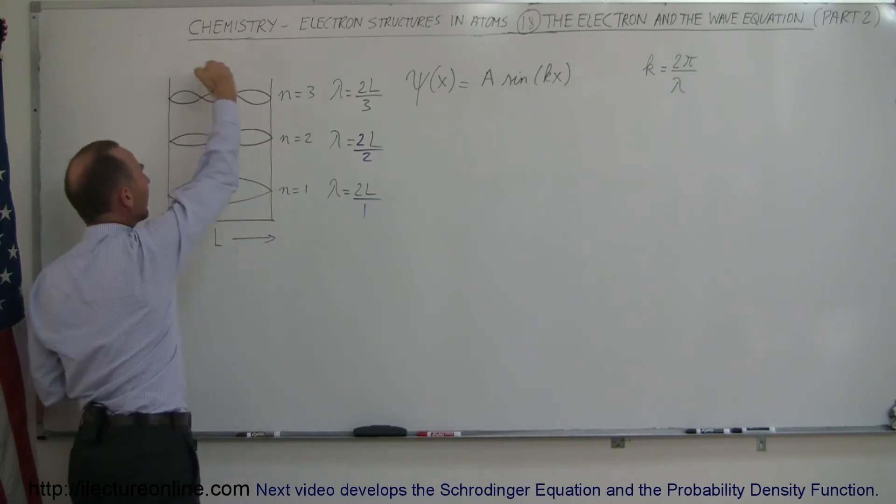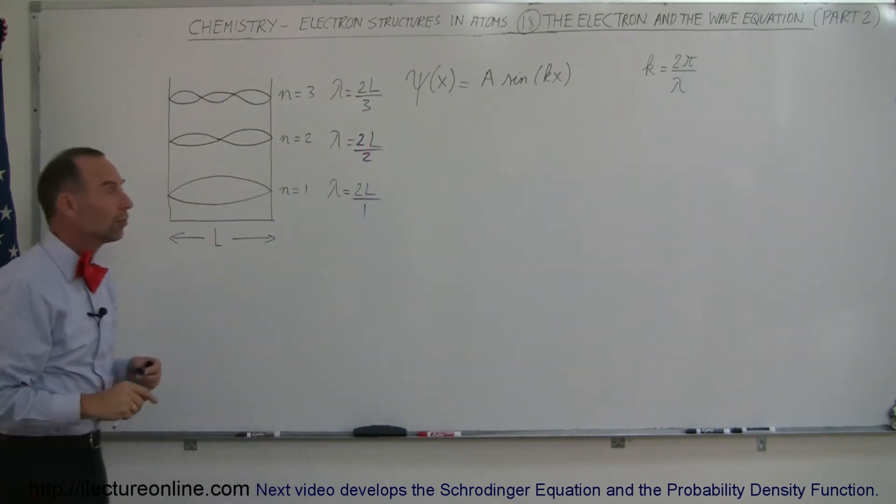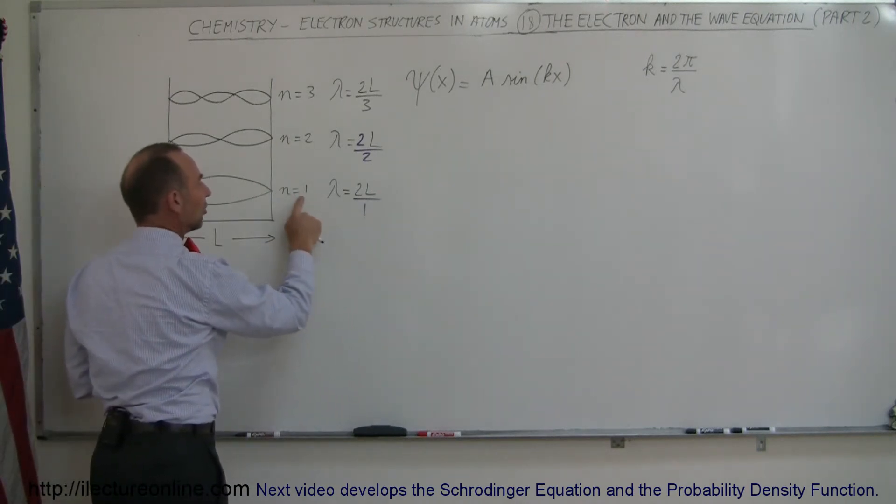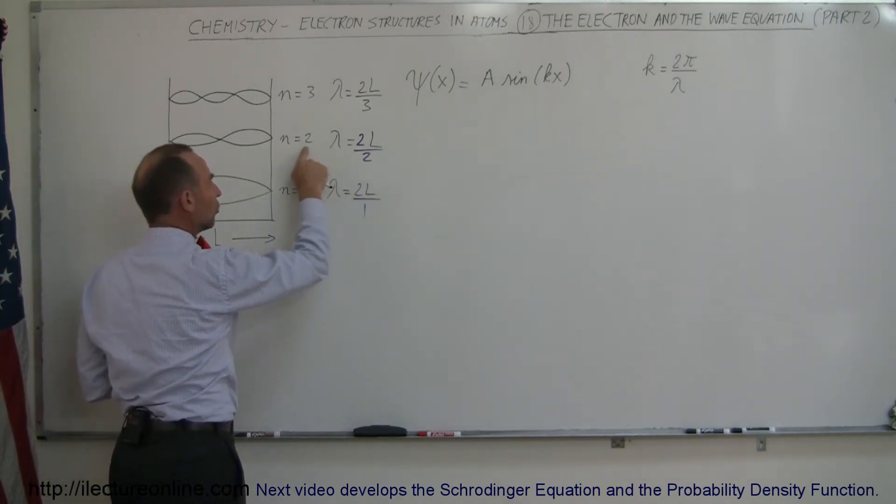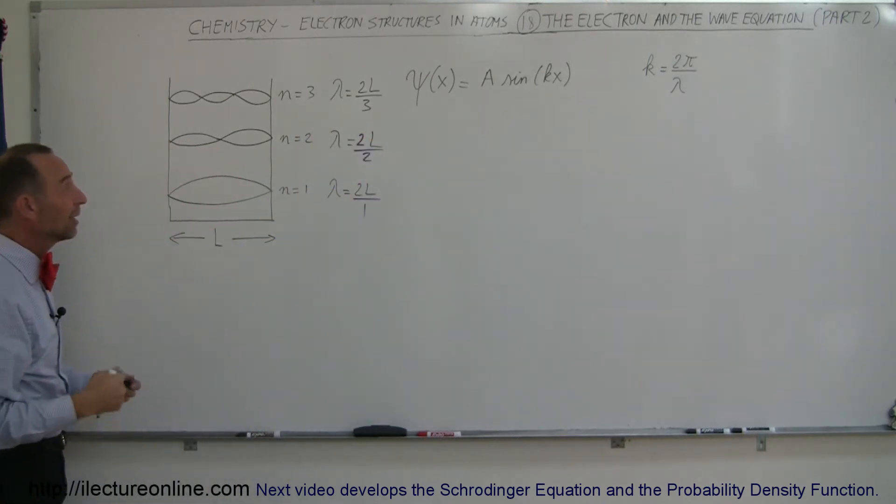And you can imagine that the next energy level, n equals 4, the wavelength will be 2L over 4, and so forth. So now that you know that, and you know that this number here corresponds to the energy level, 2 corresponds to 2, and 3 corresponds to 3, that the denominator in this equation simply corresponds to the energy level, n.